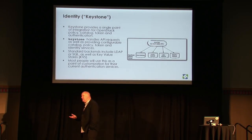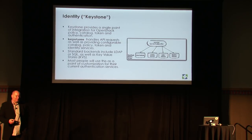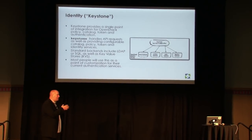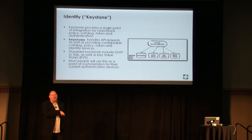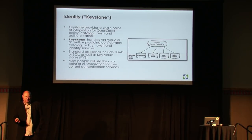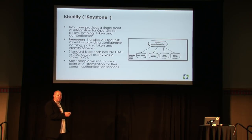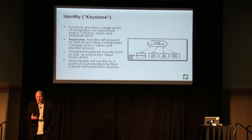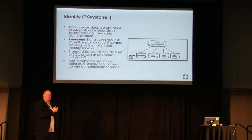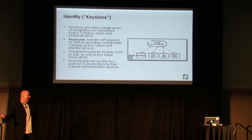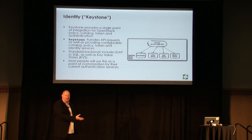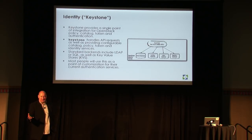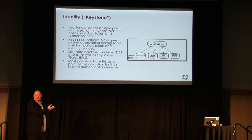The first service I talk about is identity, because you need identity for everything else. Keystone provides both a service API and an administrative API. Most services within OpenStack follow this model — they have an external or user API as well as a privileged admin API. Things that use the service API include authentication requests like 'can you authenticate me?' On the admin side, you create users and do administrative responsibilities, all done through the API.